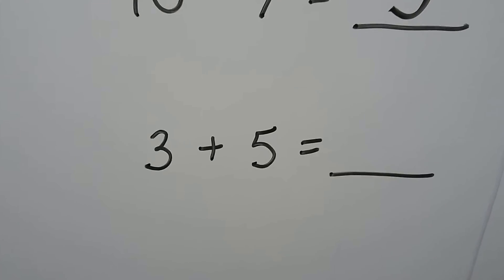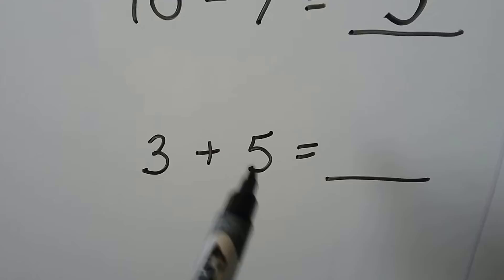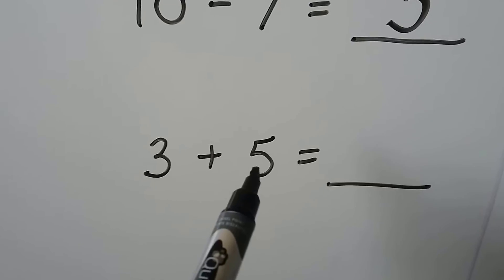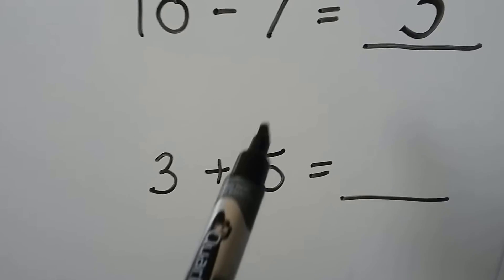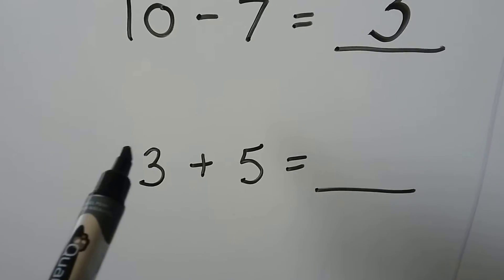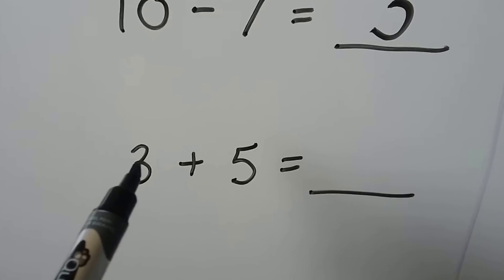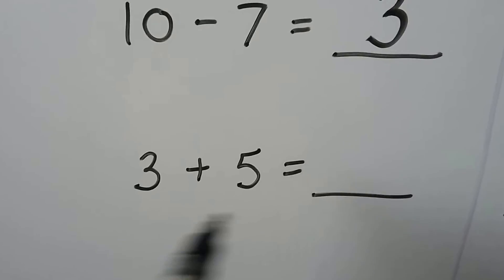3 plus 5 — we start with the larger addend and count on 3: 5, 6, 7, 8.